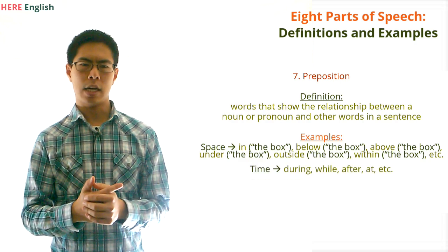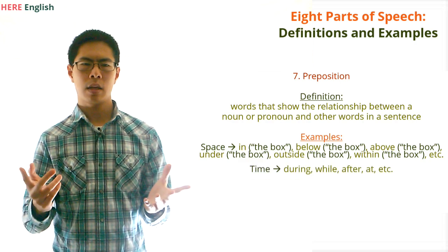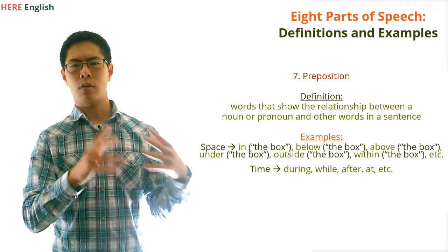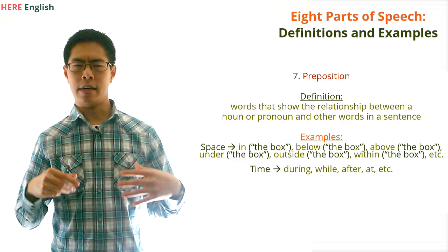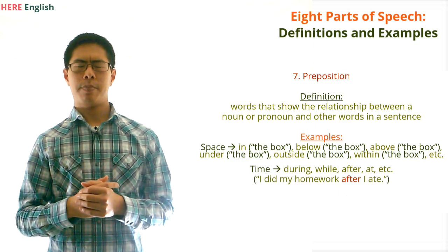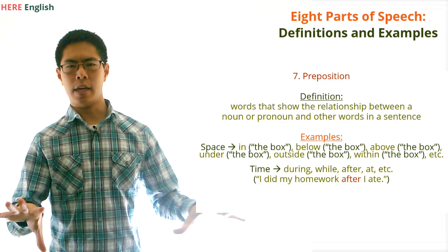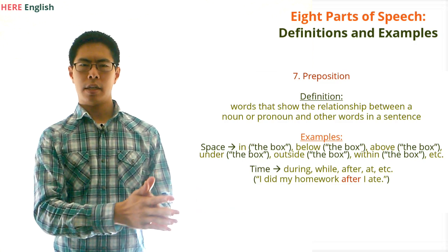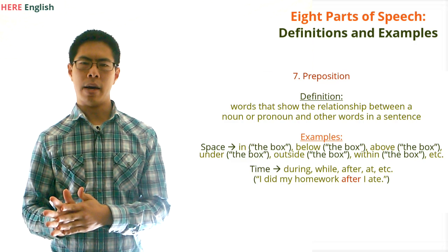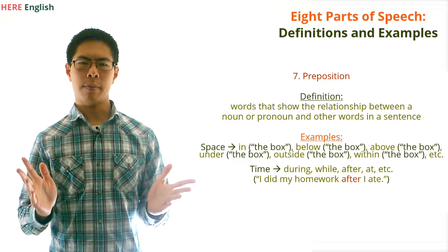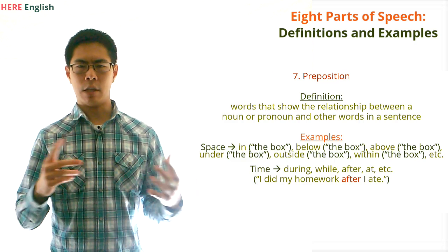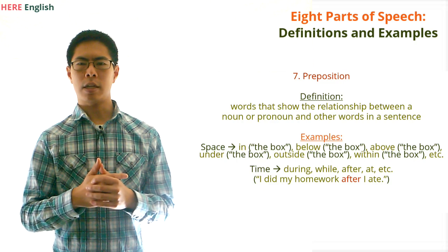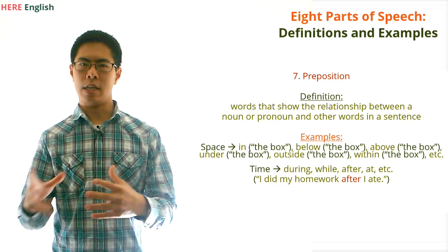Examples of prepositions that express a relationship in terms of time are during, while, after, and at. For example, in the sentence I did my homework after I ate, the preposition after tells us when I did my homework. This is different from an adverb because something comes after the preposition here, and also the preposition relates to different things in the sentence.